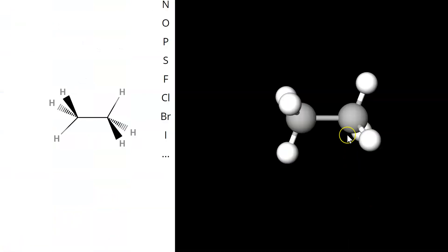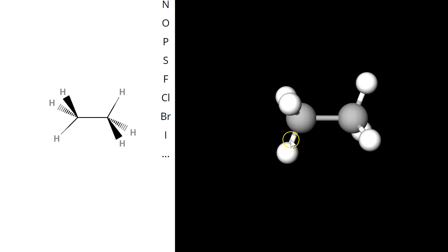Here is the ethane molecule drawn in mole view. This is the hydrogen on the left that's on the wedge. Here is the one that's on the dash. Here is the one that's in the plane. Wedge. This one behind is on the dash. This is the one in the plane.